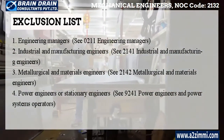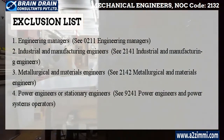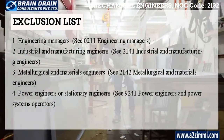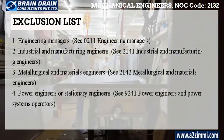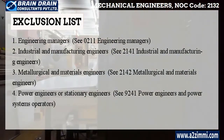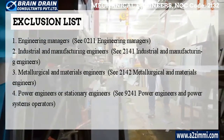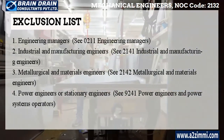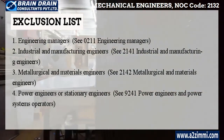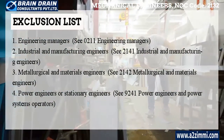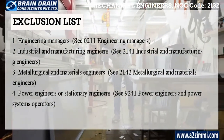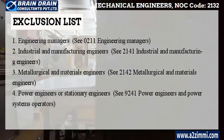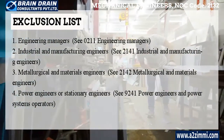Exclusion list: Engineering managers — see 0211 engineering managers. Industrial and manufacturing engineers — see 2141 industrial and manufacturing engineers. Metallurgical and materials engineers — see 2142 metallurgical and materials engineers. Power engineers or stationary engineers — see 9241 power engineers and power systems operators.